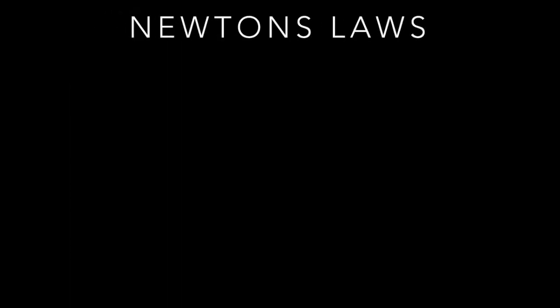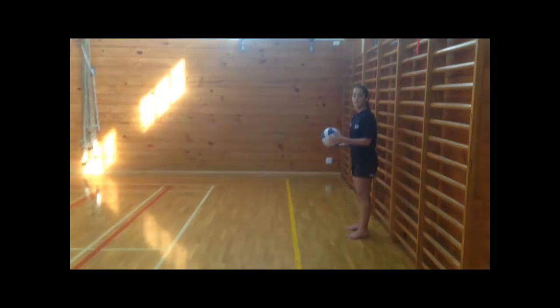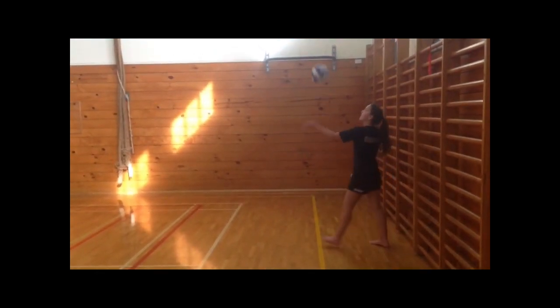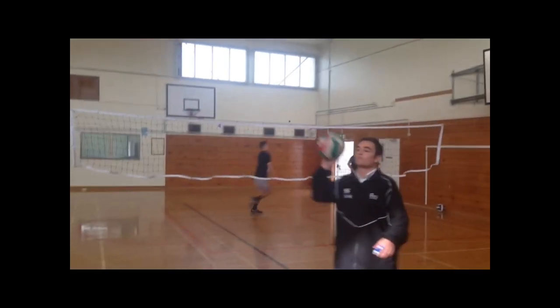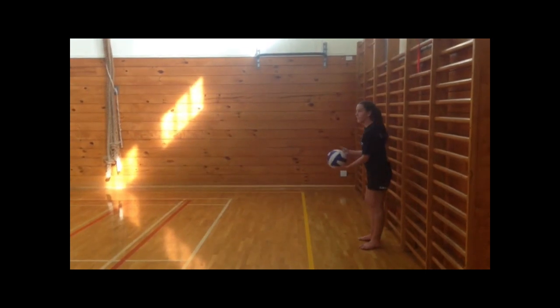Newton's first law states that an object at rest will remain at rest unless acted upon by an unbalanced force, and an object in motion continues in motion with the same speed and in the same direction unless acted upon by an unbalanced force. For my pre-test and post-test serve, Newton's first law does not change. Without gravity, a volleyball serve would theoretically continue in one direction at a constant speed forever. However, on Earth the ball begins to fall towards the ground shortly after it is served due to gravity, the unbalanced force. An opposing player passing the ball also acts as an unbalanced force, changing the ball's direction and speed.